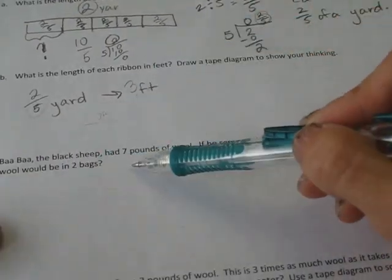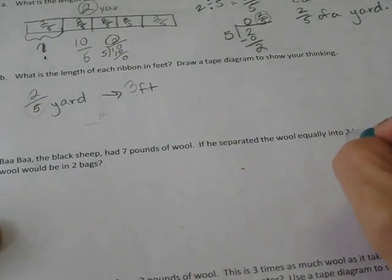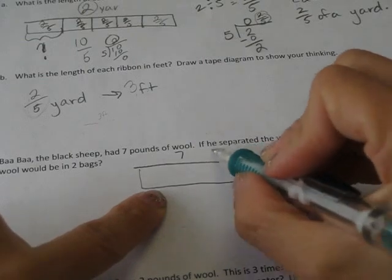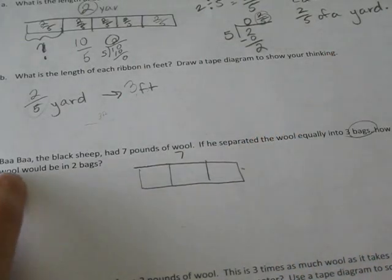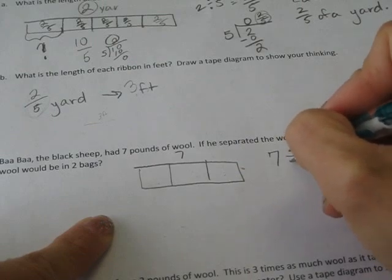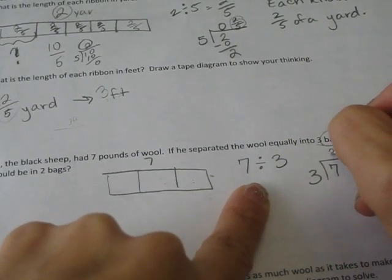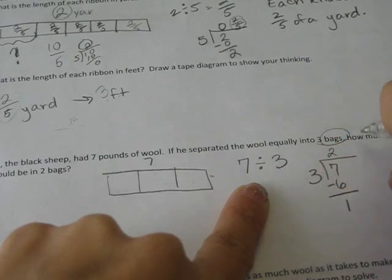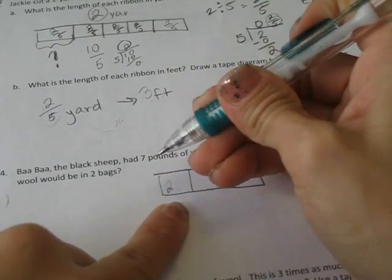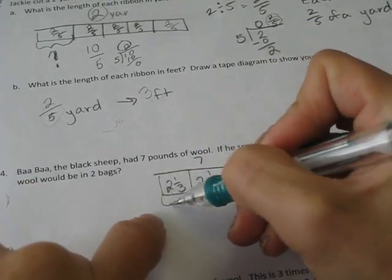So number 4. Baa Baa the black sheep had 7 pounds of wool. If he separated the wool equally into 3 bags, how much wool would be in 2 bags? First we need to figure out how many go in 3 bags. So if he has 7 pounds of wool, if he separated the wool equally into 3 bags, how much wool would be in 2 bags? So first we need to figure out how much is in each bag. So we would take that 7 pounds and divide it by 3. Okay. So that's 7 divided by 3. And that gives me 2. 2 times 3 is 6. Subtract. Bring down. So he has 2 and 1 third pounds in one of these. So this is 2 and 1 thirds, 2 and 1 thirds, 2 and 1 thirds.